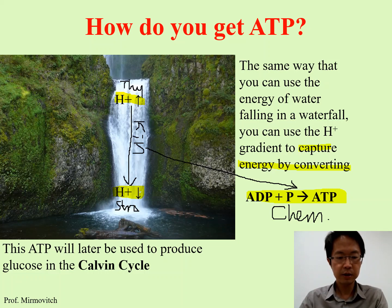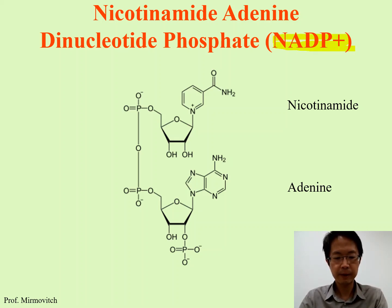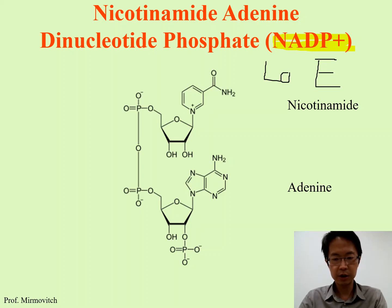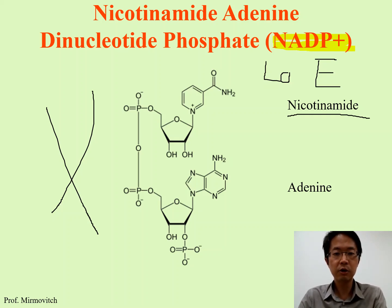The ATP will be used for the production of glucose in the Calvin cycle. Regarding NADP+, it is a molecule with low energy. You don't need to memorize its structure. One thing worth mentioning is that nicotinamide is vitamin B, so please take your multivitamin. We'll talk more about this when we discuss cellular respiration.